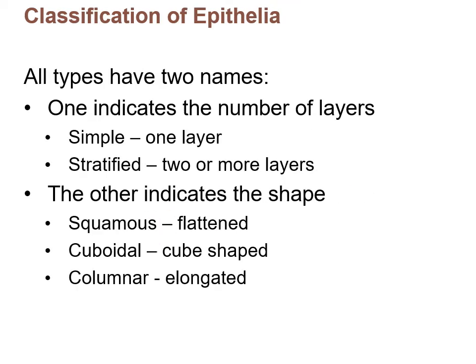For the classification of epithelia, each epithelium has two names. The first indicates the number of layers: one layer is called simple, and two or more layers is called stratified. The second name indicates the shape of the cells, of which there are three types: flattened, cuboidal, or columnar.